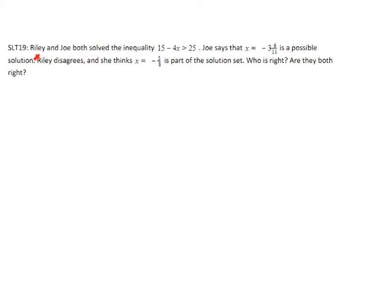Let's read this problem: Riley and Joe both solved the inequality 15 minus 4x is greater than 25. Joe says that x equals negative 3 and 6/11 is a possible solution; Riley thinks x equals negative 3/8 is part of the solution set. The only way to tell who is right is to solve this inequality. I'll rewrite it: 15 minus 4x is greater than 25. I predict we'll be changing the direction of the inequality because of the negative 4x.